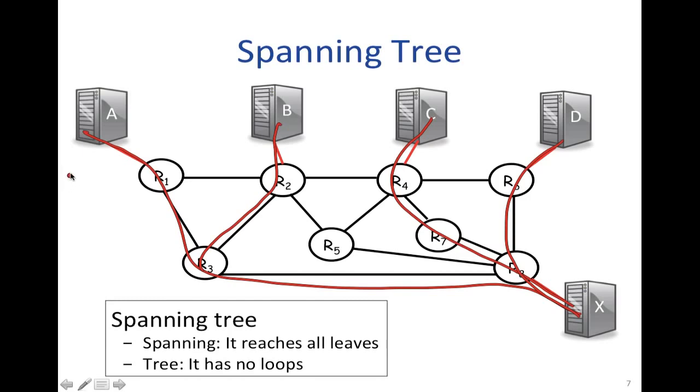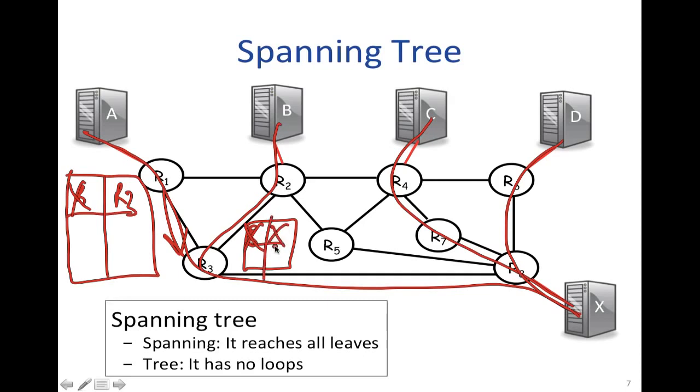This would be implemented by populating the routing, the forwarding table at R1, with the entry, if I want to go to x, then I go to R3 as my next hop. That's telling it what to do here. Likewise, at R3, we would have an entry that said, if I want to go to x, then I will go directly to x. Similarly, over here in R4, I will say if I'm going to go to x, then I'll go there via R7. So the spanning tree is used in order to create the routing entries so that we can populate the forwarding tables, and therefore route paths along that spanning tree.